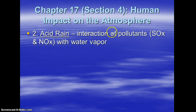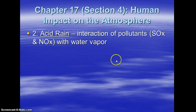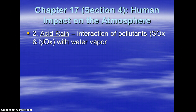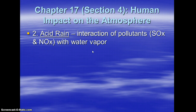Acid rain is formed when pollutants such as SOx and NOx mix with water vapor — they make sulfuric acid and nitric acid. To a smaller degree, carbon dioxide also mixes with water vapor to make carbonic acid. So SOx, NOx, and carbon dioxide are all acid rain contributors, and we know these come from burning fossil fuels.